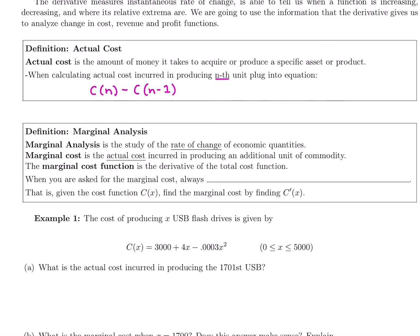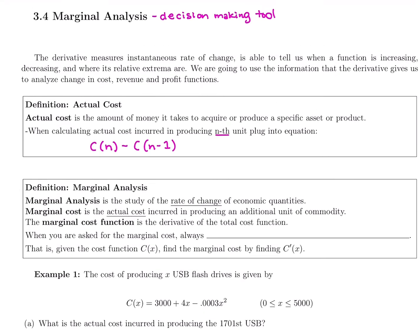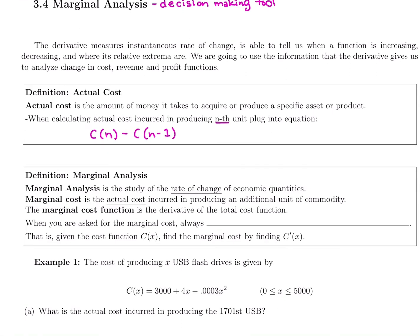Marginal analysis is the study of the rate of change in economic quantities. Marginal cost is the actual cost incurred in producing an additional unit of commodity. Marginal analysis is a tough interpretation. We want to remember that marginal estimates the actual cost. It estimates this formula, doing what we find in that two-step formula, plugging in C(n) and C(n-1), just a little bit faster. It predicts the actual cost for the next unit.